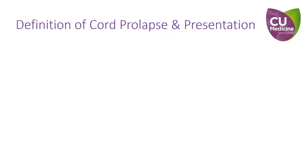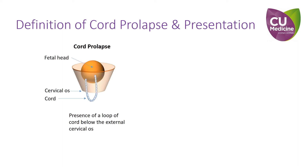The first issue is the confusion of their definitions. Traditionally, cord prolapse is defined as the presence of a loop of cord below the external cervical os. As the exposed cord is clinically identifiable, it is also commonly called overt prolapse.